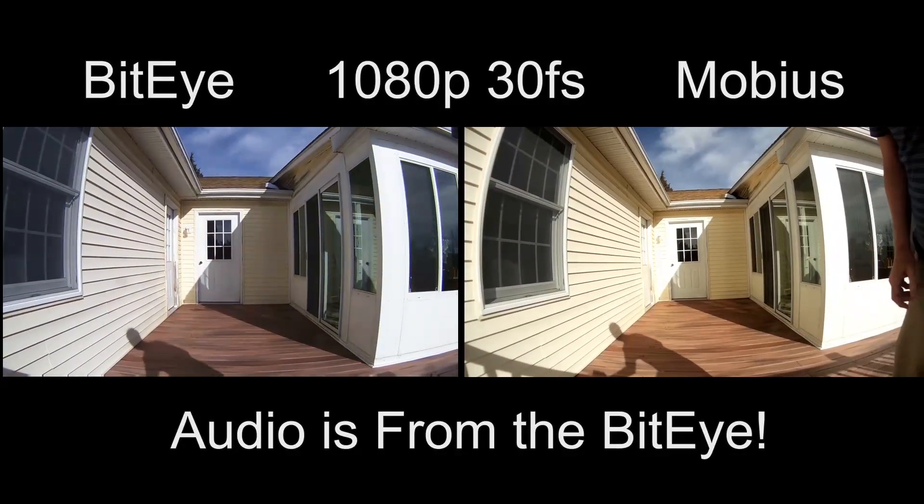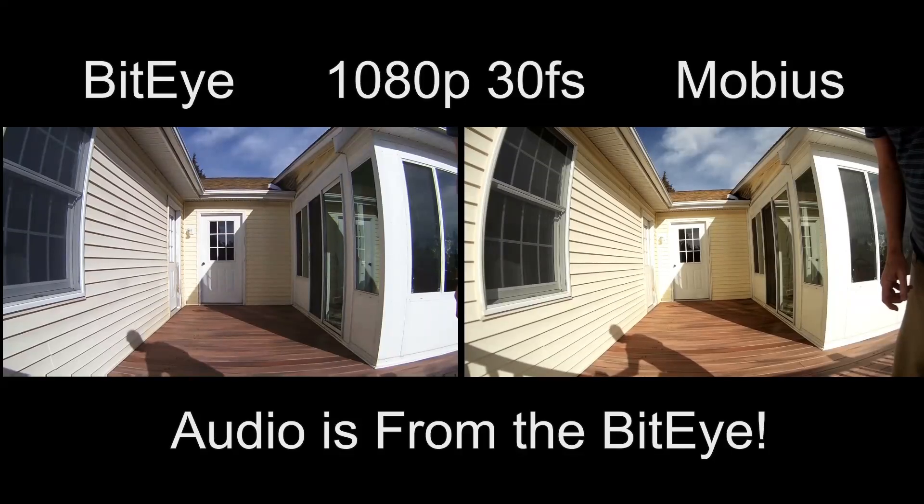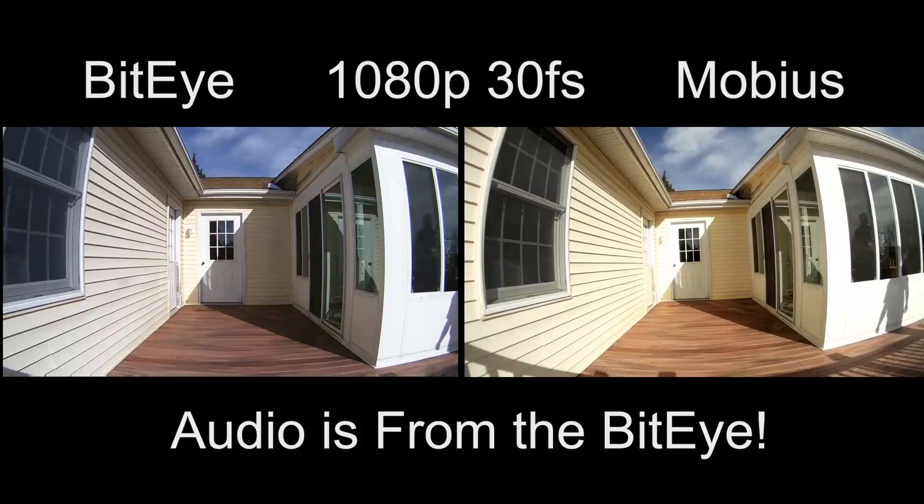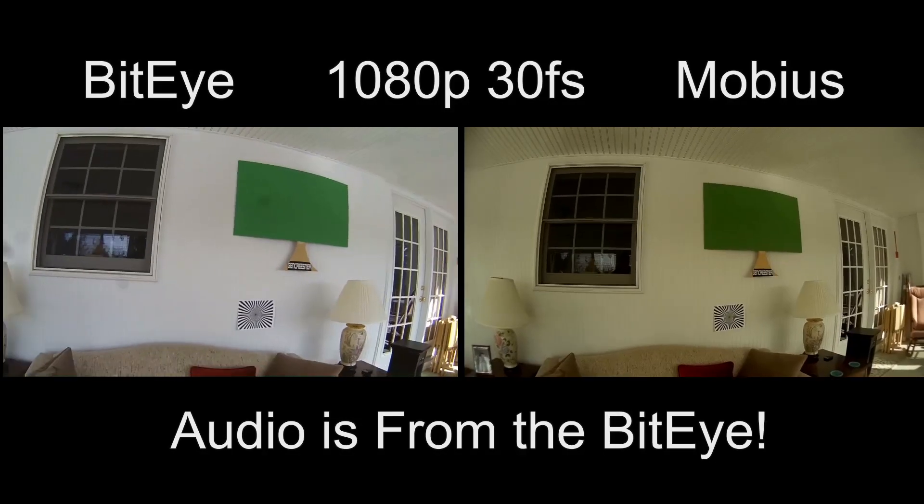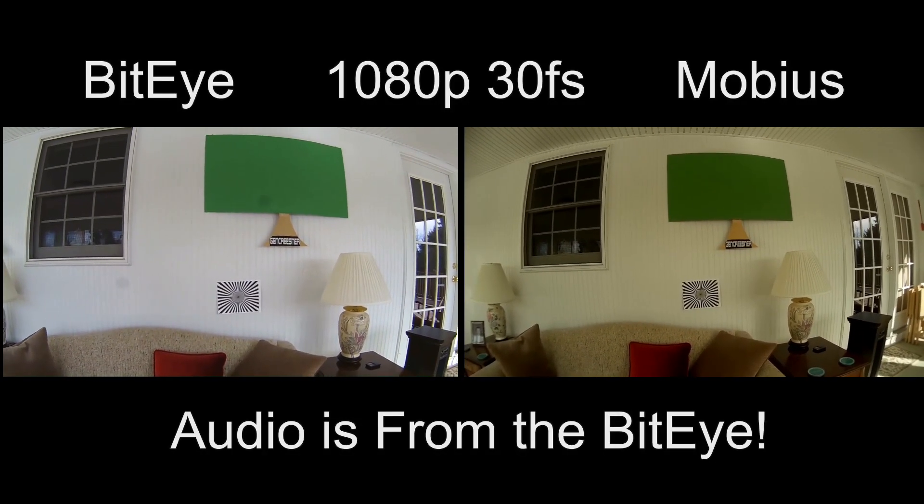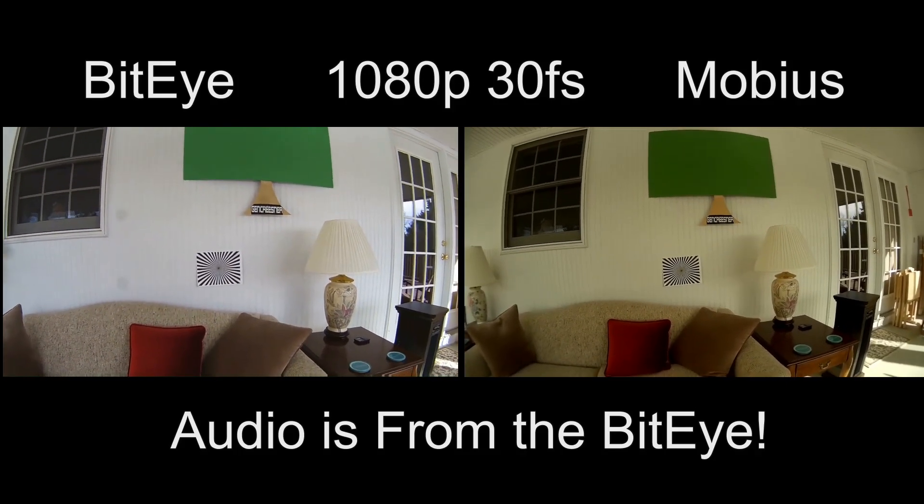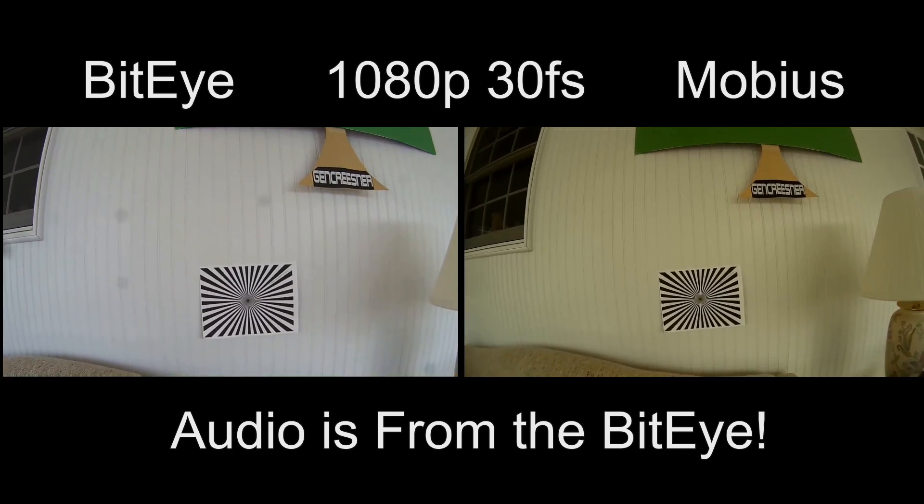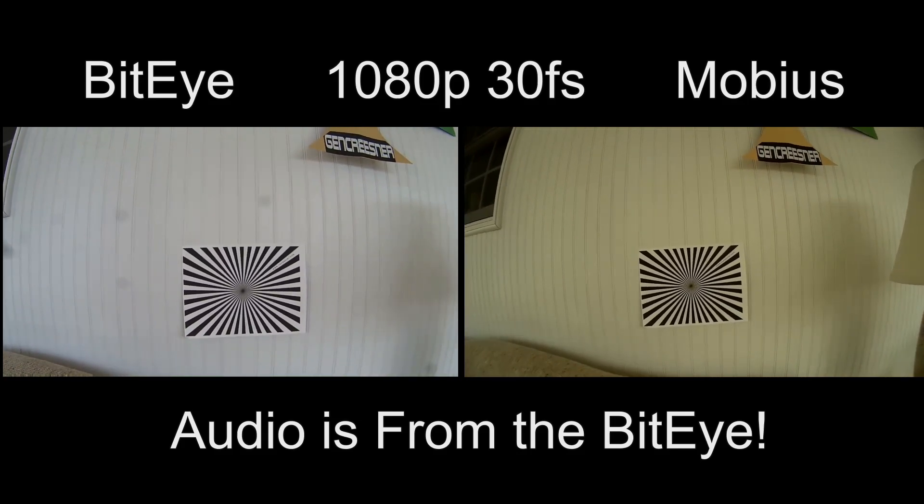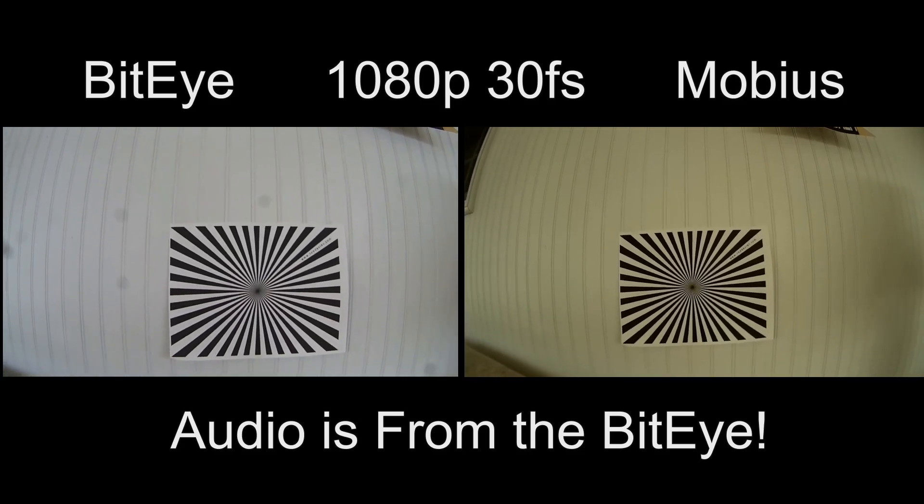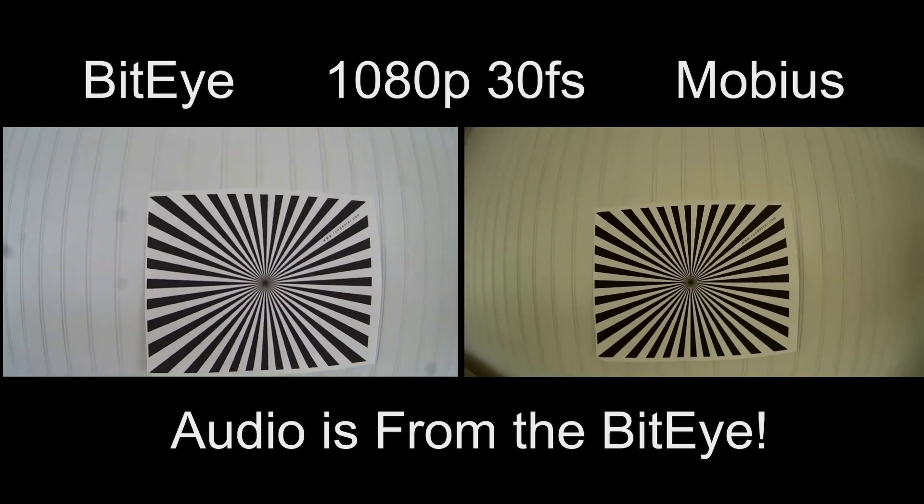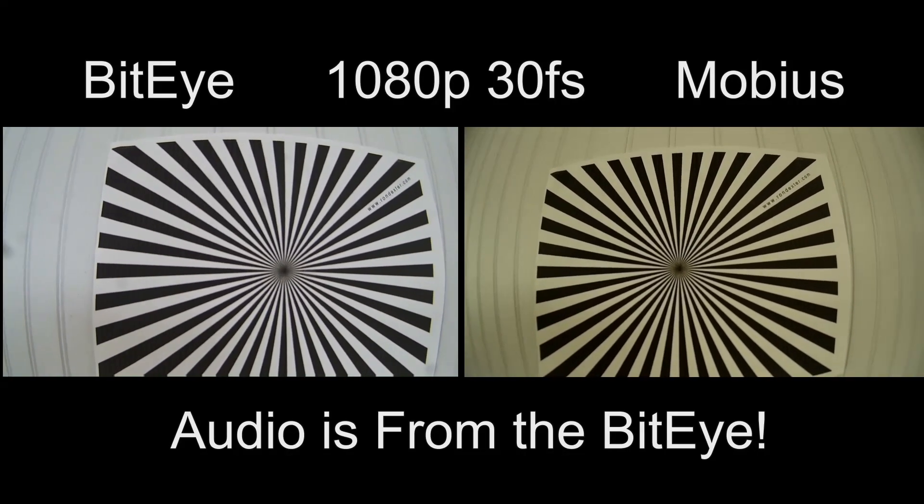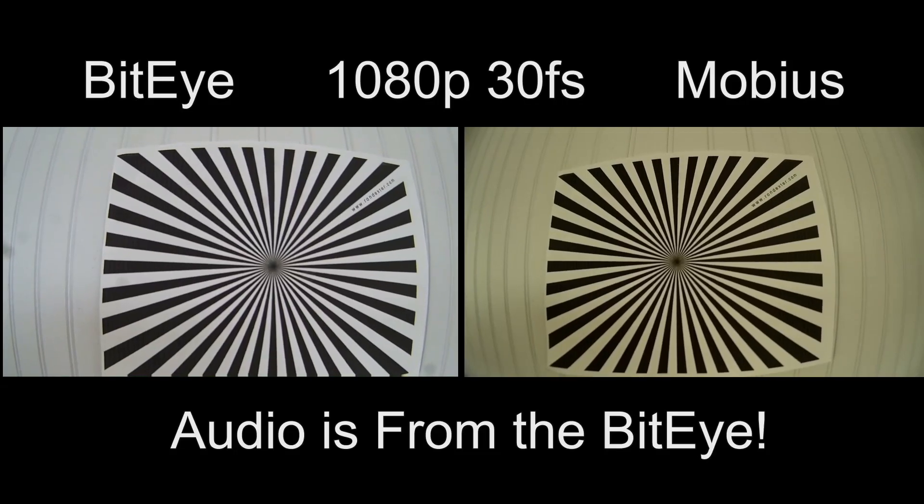Now let's put it down here for our field of view test. Mobius versus BitEye. Okay now we're going to do sort of a focal length test here. Now I'm about six feet away from my chart. Coming in. Now this thing's supposed to go out of focus at about a meter. That's a meter right there. Now I'm coming in closer. There we go. Now that's really close right there. And we're only about 30 centimeters away now.